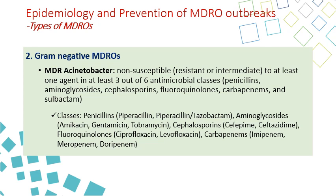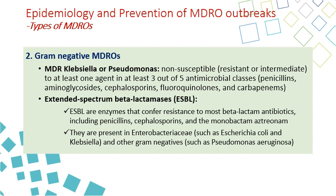MDR Acinetobacter is non-susceptible, meaning resistant or intermediate, to at least one agent in at least three to six antimicrobial classes. These include penicillins, aminoglycosides, cephalosporins, fluoroquinolones, carbapenems, and sulbactam. MDR Klebsiella or MDR Pseudomonas is similar to Acinetobacter but does not include sulbactam — it is non-susceptible to at least one agent in three to five antimicrobial classes, including penicillins, aminoglycosides, cephalosporins, fluoroquinolones, and carbapenems.